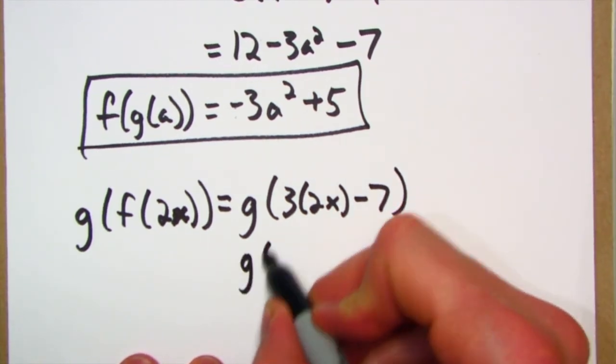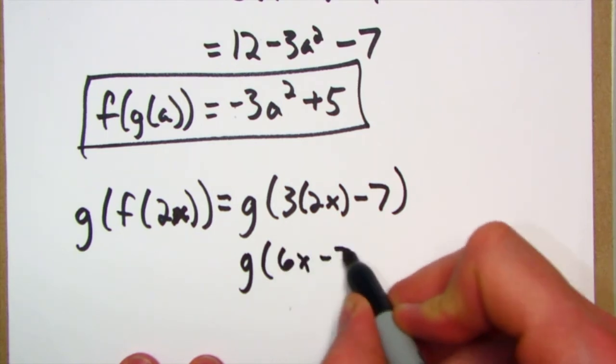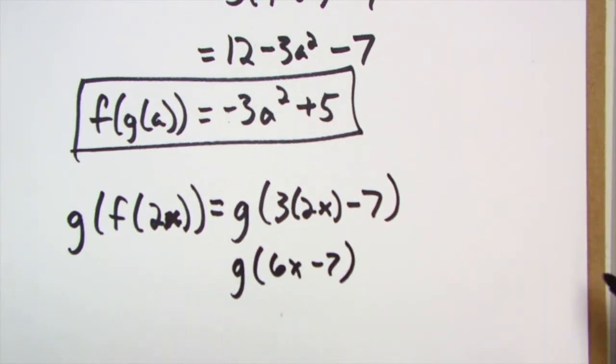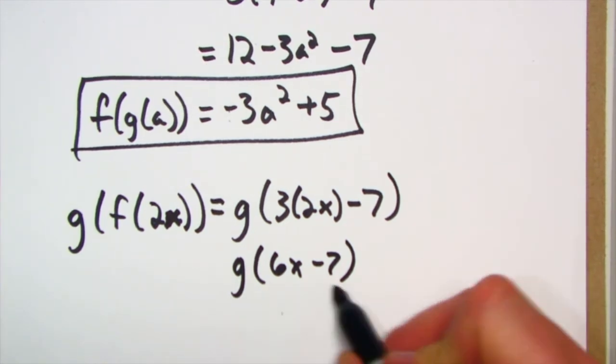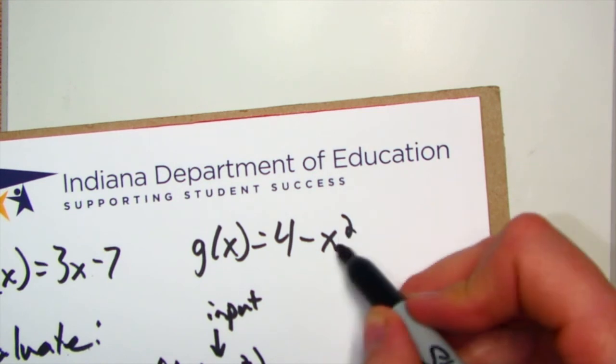Simplify it out: g of that's going to be 6x minus 7. All right, how am I going to do that? Well, I'm going to put 6x minus 7 in for the x in the g function.